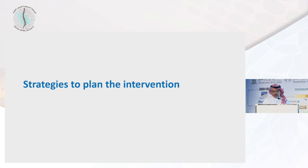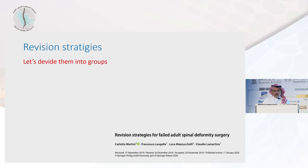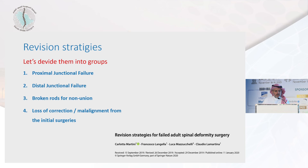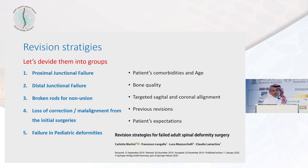Let's go through the strategies to plan intervention. If we keep in mind that there are many reasons for revisions, we can group them into five categories: proximal junctional failure, distal junctional failure, broken rod or nonunion, loss of correction or malalignment from the initial surgery, and pediatric deformities. We need to always address the core morbidities: age, bone quality, targeted sagittal and coronal alignment, previous surgeries, and patient expectations.